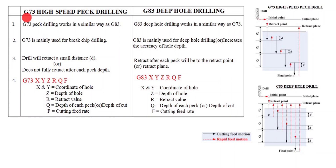Hi friends, welcome to my channel Excellent Ideas in Education. Today we are going to learn about the difference between G73 and G83. G73 is high-speed peck drilling; G83 is deep hole drilling.